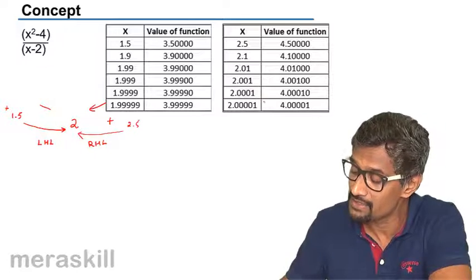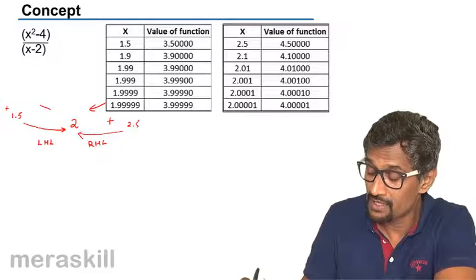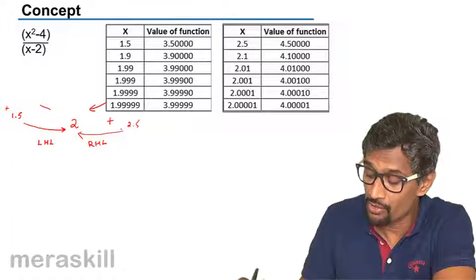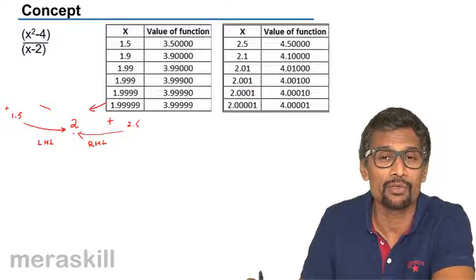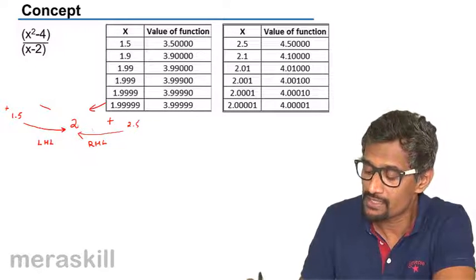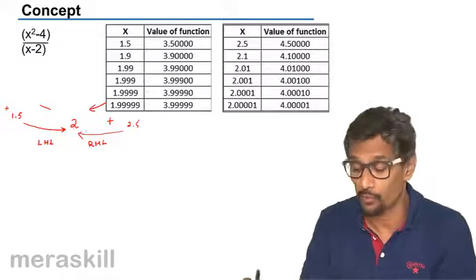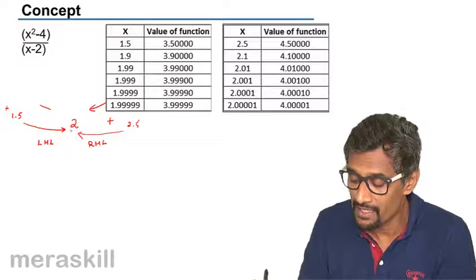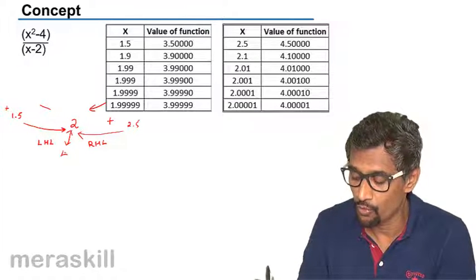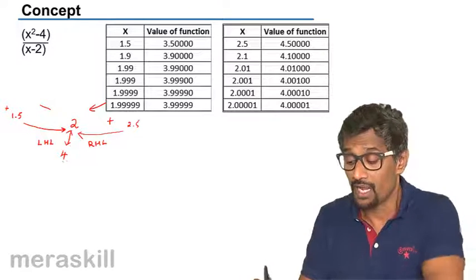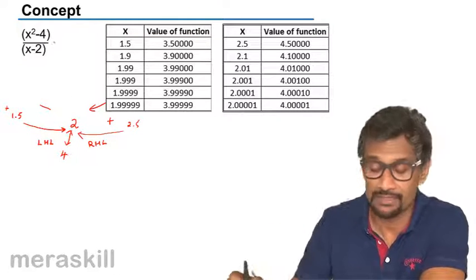You find that even this way, the value of the function is getting closer and closer to four. Only thing is the value of the function is more than four, but ultimately the limit is four. That means ultimately the limit exists in such a case.